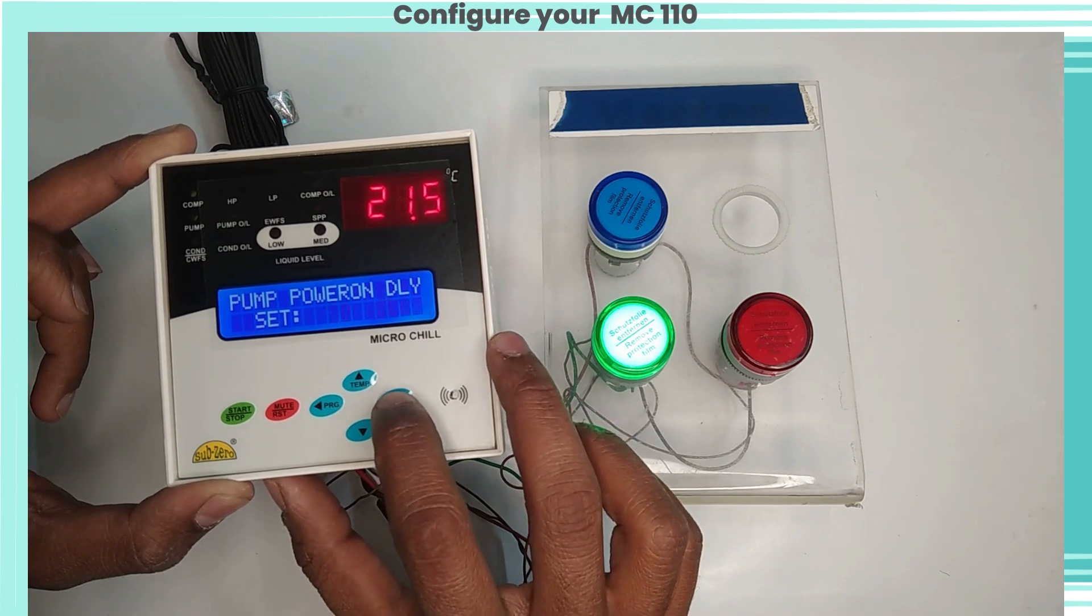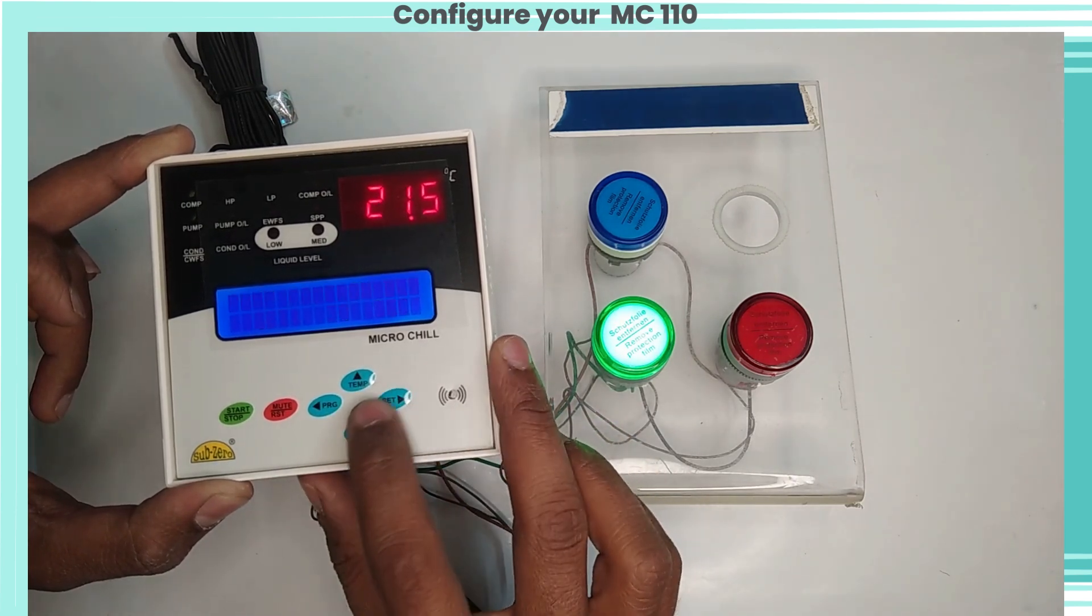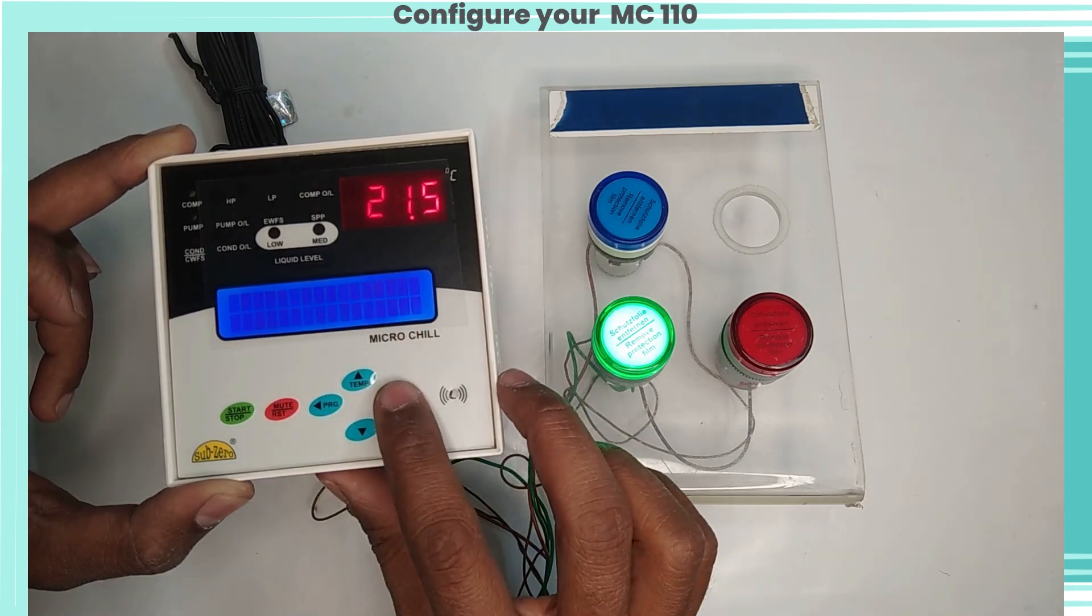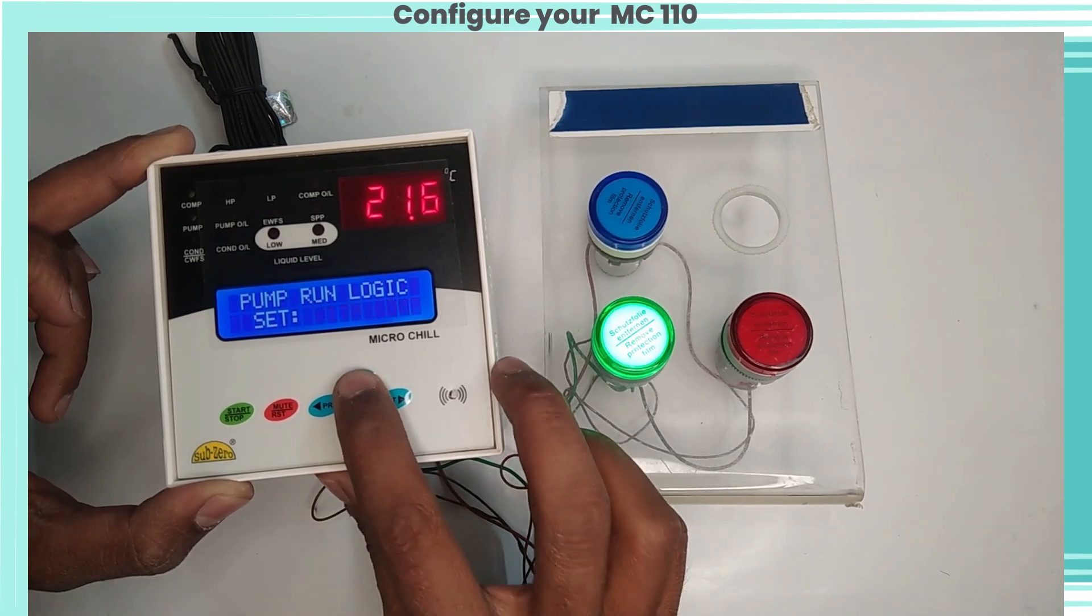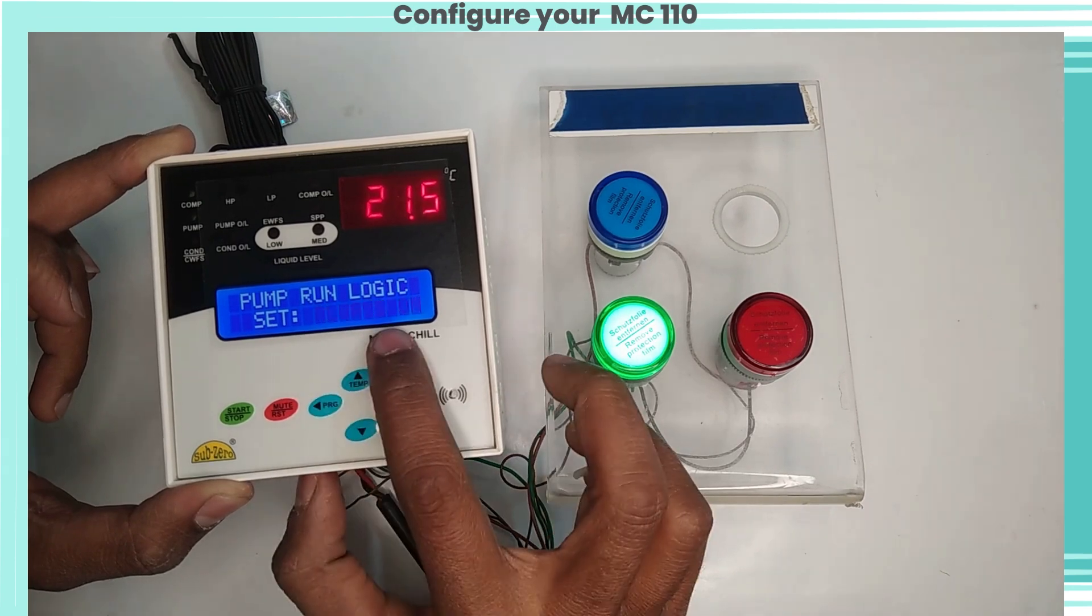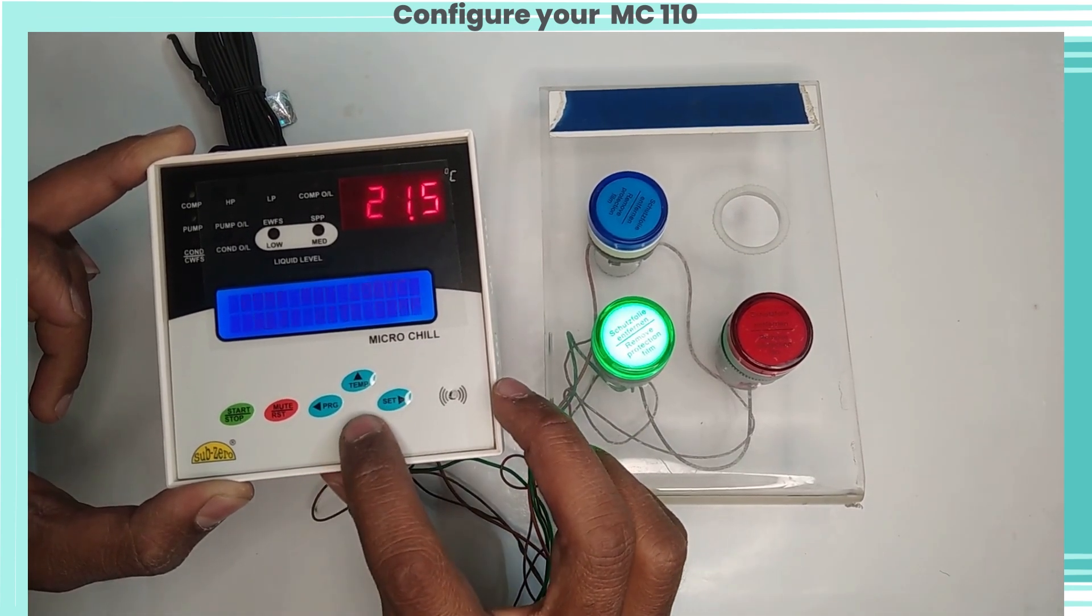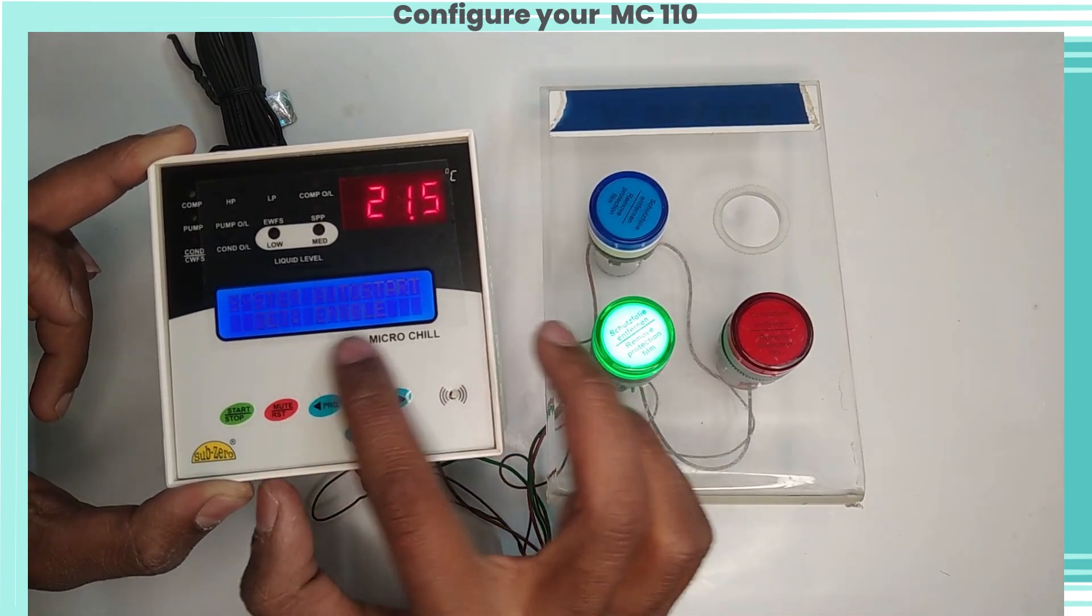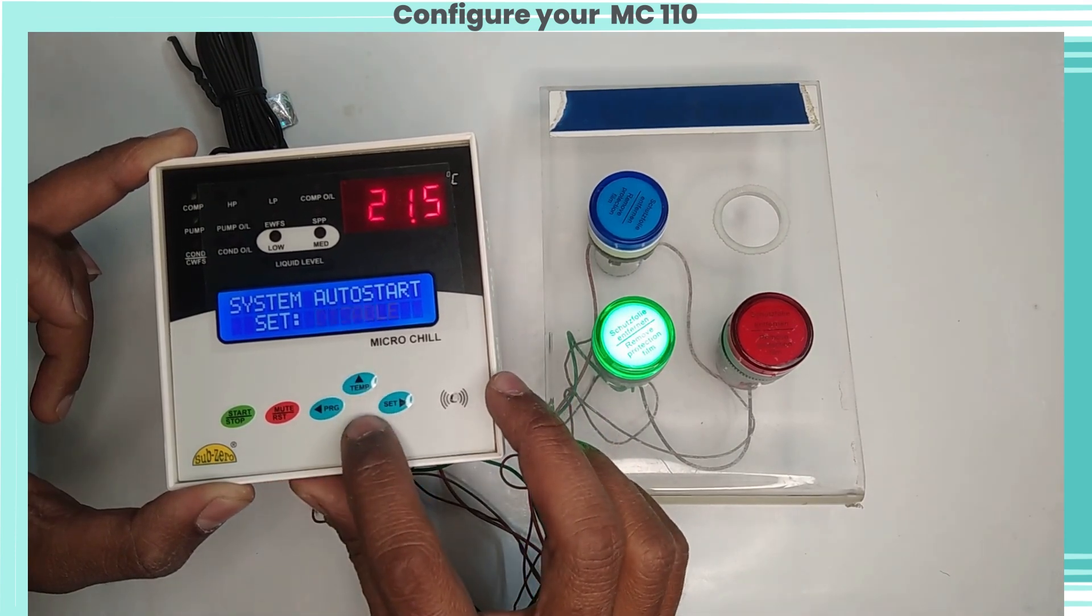Pump power on delay: this parameter is used to set delay for pump to start at power on. This is applicable if the pump is running with compressor. Pump run logic: this parameter configures pump to keep always on or off with compressor. System auto start: this parameter configures system to auto start or manual start on power on.